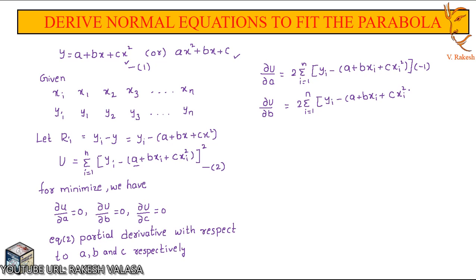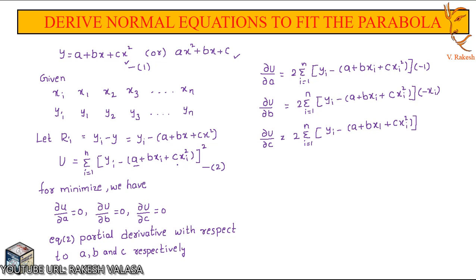Similarly, partial derivative with respect to b gives minus xi, since the remaining terms are constants. And the next partial derivative, ∂U/∂c, equals 2 times summation from i equal to 1 to n of yi minus a plus bxi plus cxi square, where the c term is cxi square, giving partial derivative minus xi square.